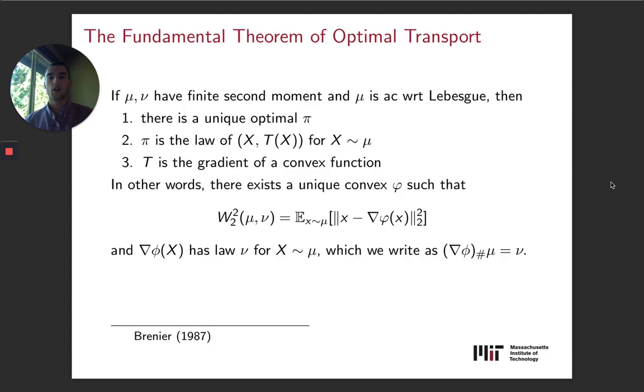The fundamental theorem of optimal transport is this really remarkable result that goes back to the 1980s. One of the important references is Brenier. It says that if you have two measures with finite second moment, and the source measure is absolutely continuous with respect to Lebesgue, then there is a unique optimal pi in the optimal transport problem. And actually, it's the law of a deterministic coupling. So it's the law of (x, T(x)) for T, some deterministic mapping. And then the really remarkable thing beyond those two facts is that T is actually the gradient of a convex function.